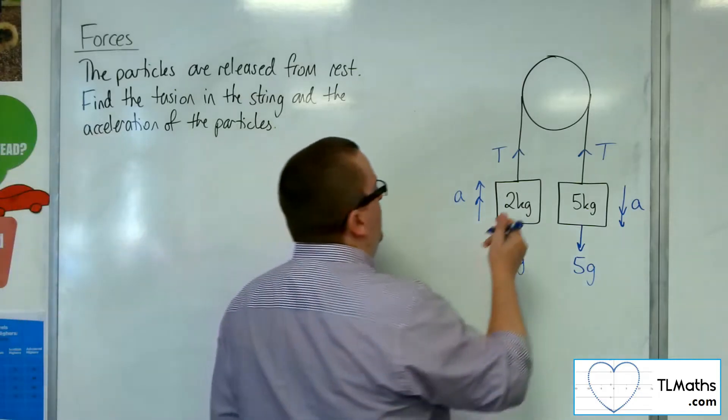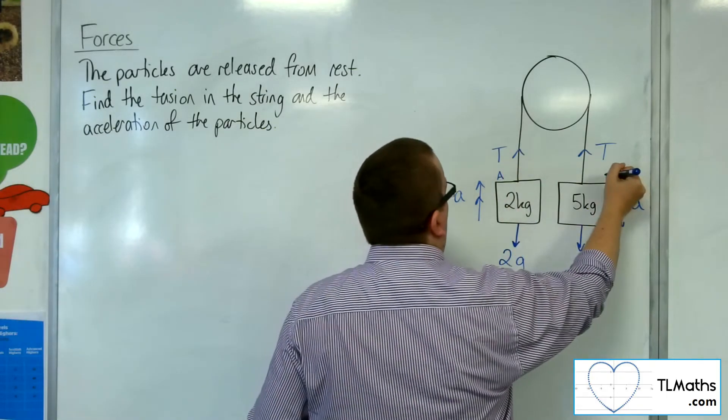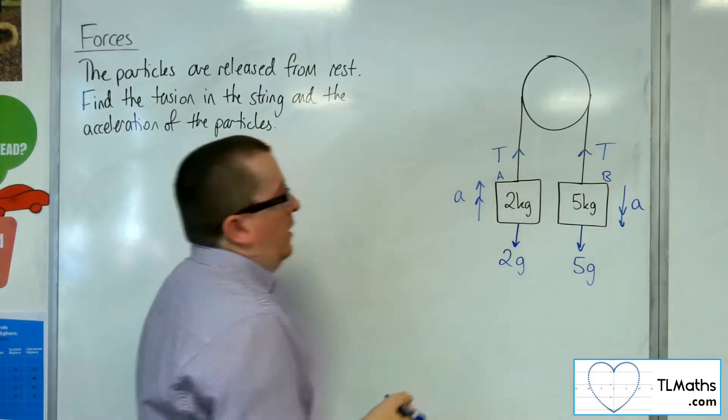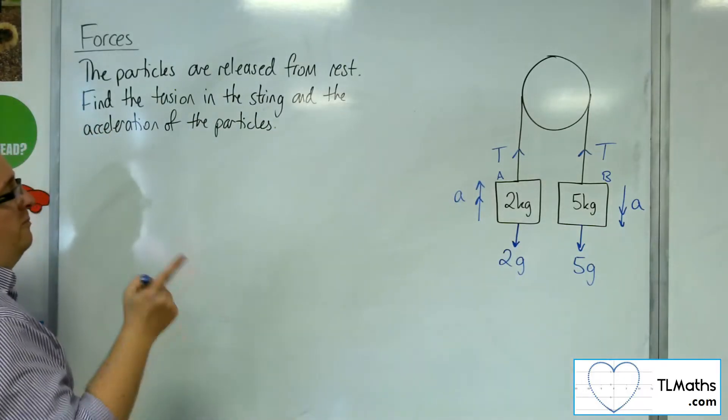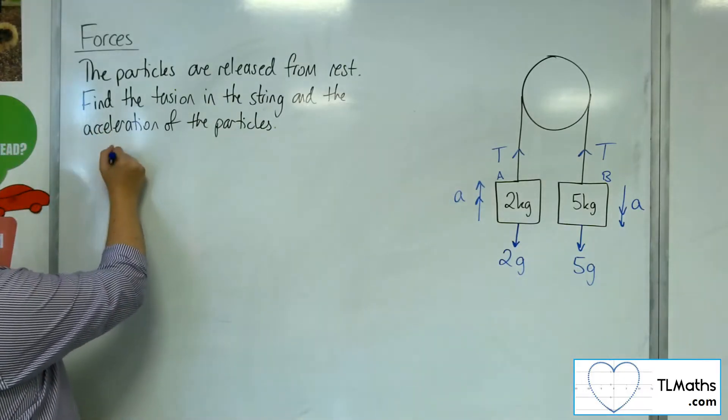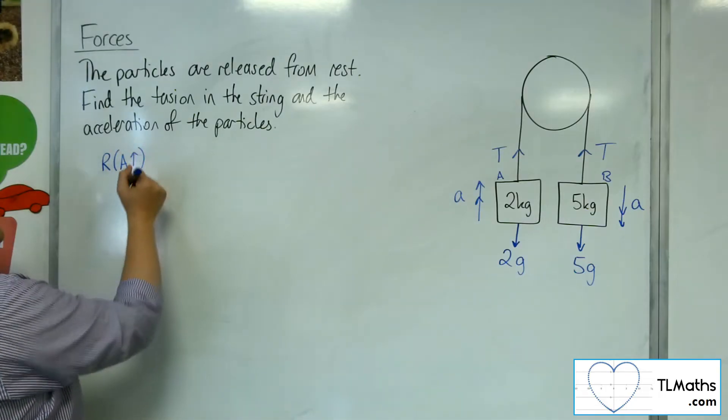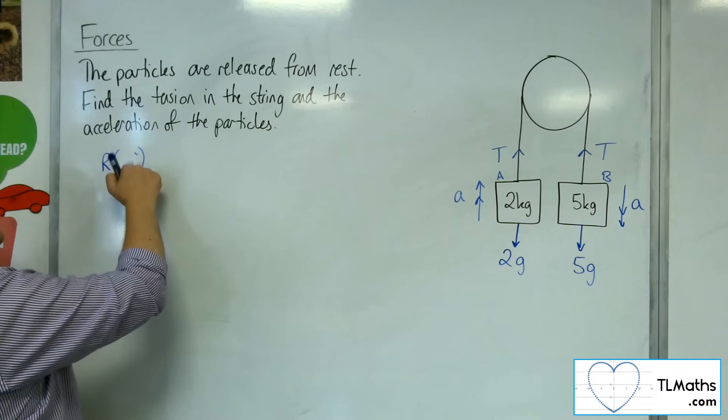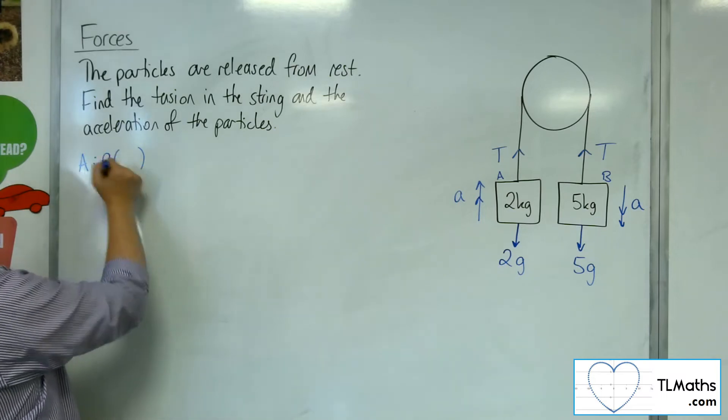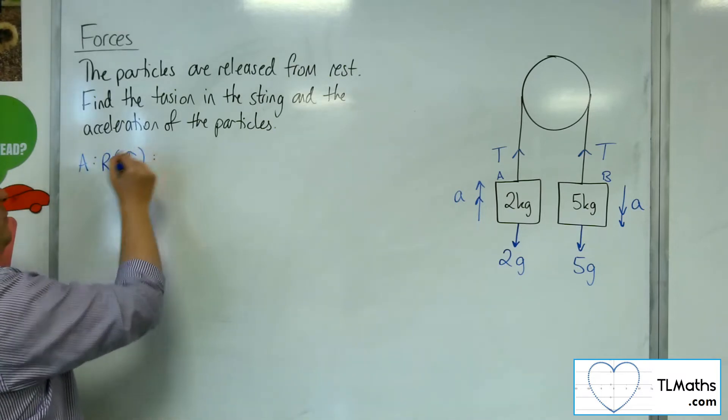So if we call this particle A and we call this particle B, I'm going to first of all resolve particle A, taking A as up. Let me write it like this instead. So I'll look at particle A and I'll resolve upwards, taking upwards as positive.